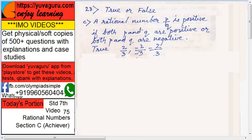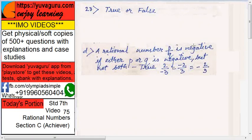Next, a rational number p upon q is negative if either p or q is negative but not both. That is also true. Here, either p or q - 2 upon -3, -2 upon 3 - minus, even if this minus is common to both then also minus. But if both are minus, 2 upon -3, then it is plus. So that's why this is true.